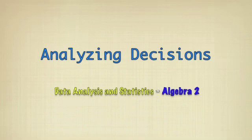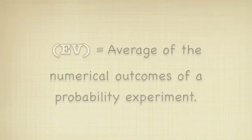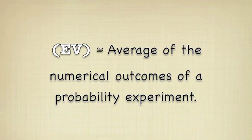In this chapter of data analysis and statistics, we will be talking about analyzing decisions, whether to make decisions precisely or not. So in experiments, when you do experiments with numerical outcomes, the expected value, or EV, is the weighted average of the numerical outcomes of a probability experiment.